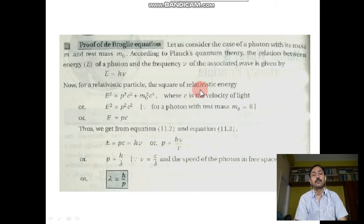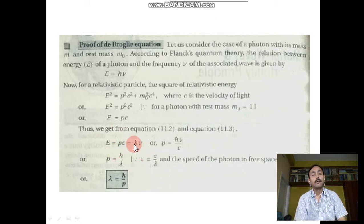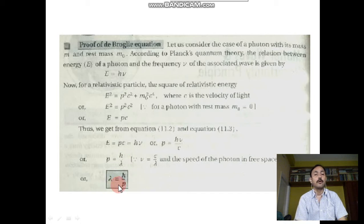For a relativistic particle, the square of relativistic energy is E² = p²c² + m₀²c⁴, where c is the velocity of light. For a photon with rest mass m₀ = 0, E² = p²c², so E = pc. We can write E = pc = hν, so p = hν/c. Since ν/c = 1/λ, we get p = h/λ, and therefore λ = h/p. This is de Broglie's formula.